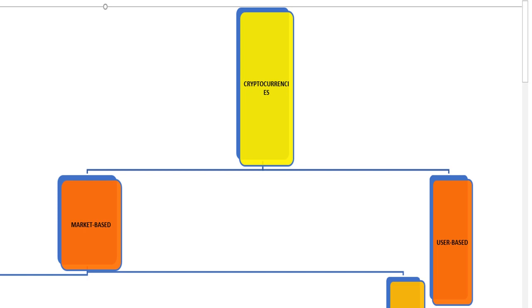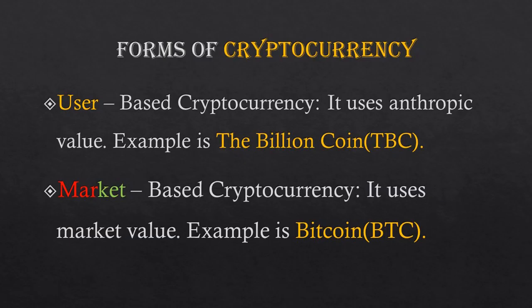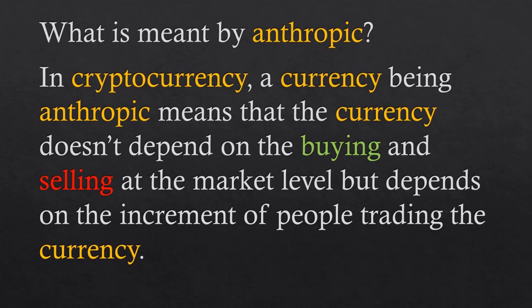Cryptocurrency as a broad subject is divided into two main forms: user-based cryptocurrencies and market-based cryptocurrencies. A user-based cryptocurrency means the currency doesn't depend on buying and selling at the market level — it depends on the number of people trading the currency.